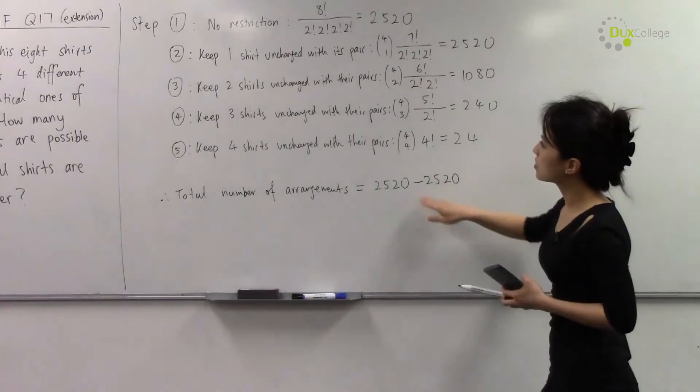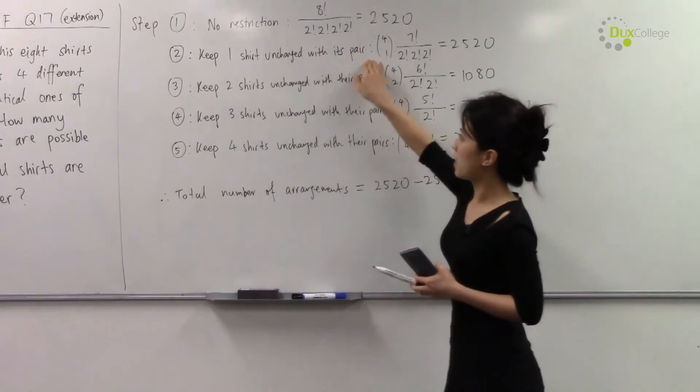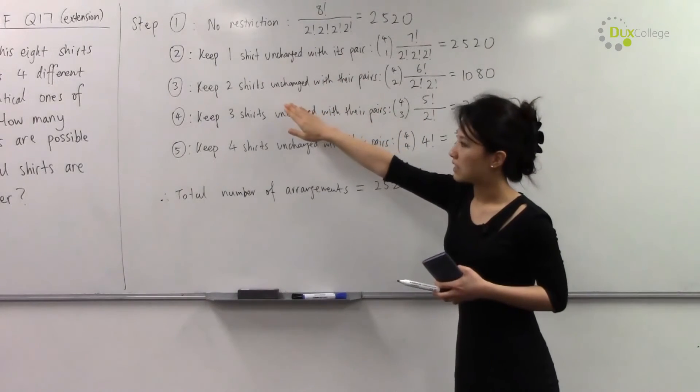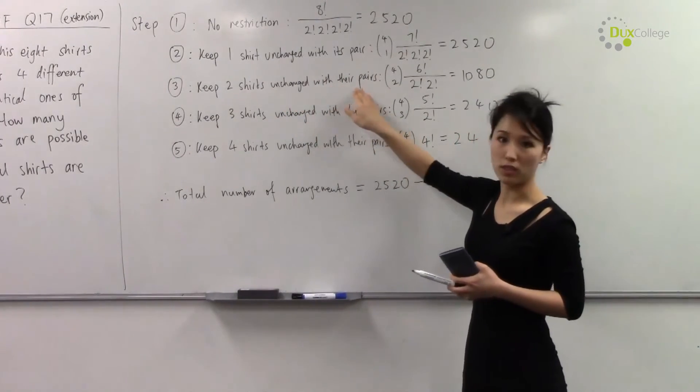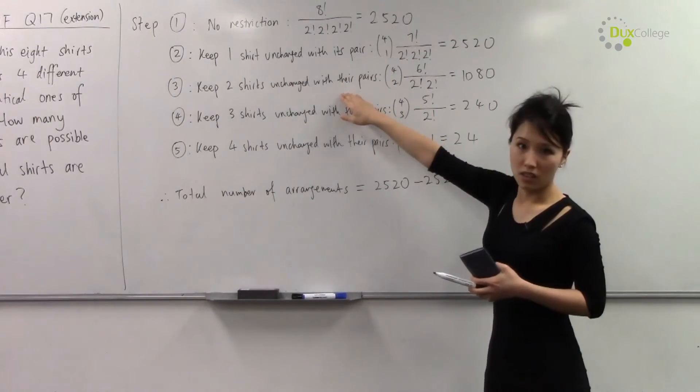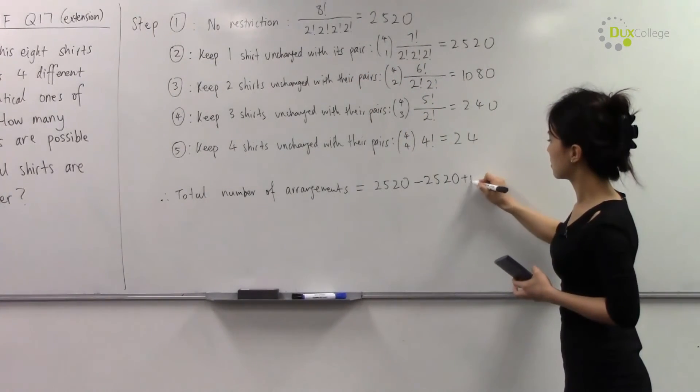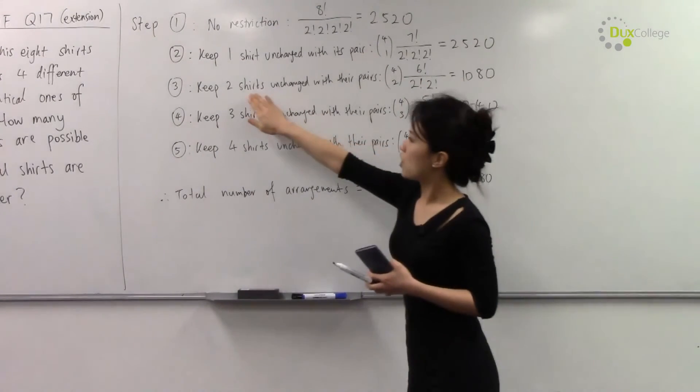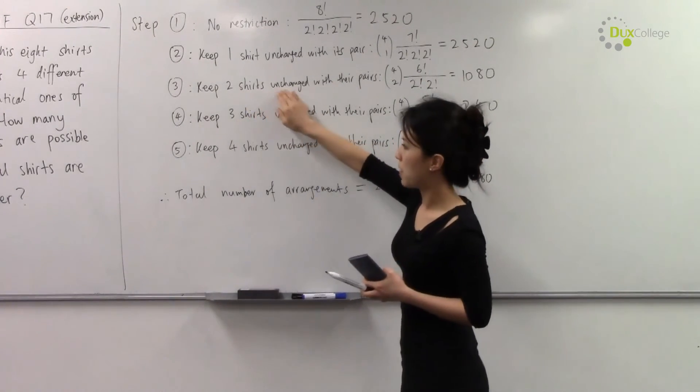Now keeping in mind that when you subtract one shirt with its pair unchanged, you're also subtracting in the situation where there are two shirts with the pairs unchanged. So since you subtracted this, you need to add this back.